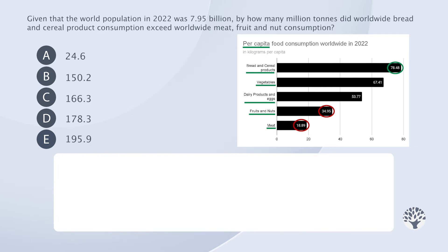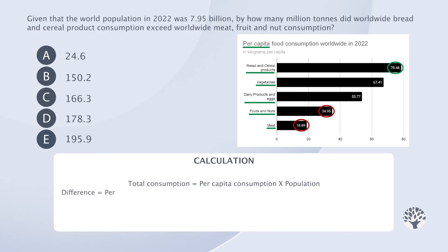The latter two values are circled in red, as we need to subtract those from the value circled in green. Now, there's a great shortcut to help us find the answer. If we subtract the per capita values for meat and fruit and nuts from that of bread and cereal products, and multiply the subtotal by the population, we'll have the value we need. In other words, per capita bread and cereal consumption minus per capita fruit and nut consumption minus per capita meat consumption, multiplied by the population, gives us our answer.